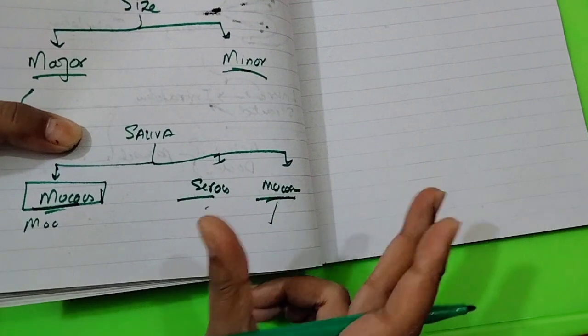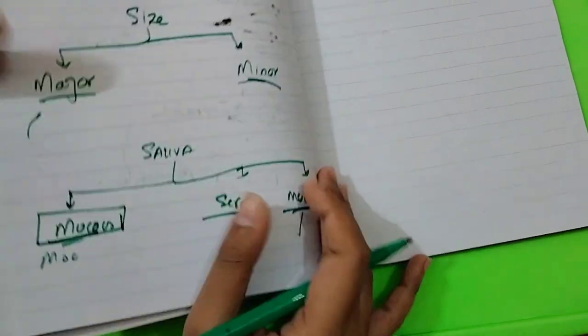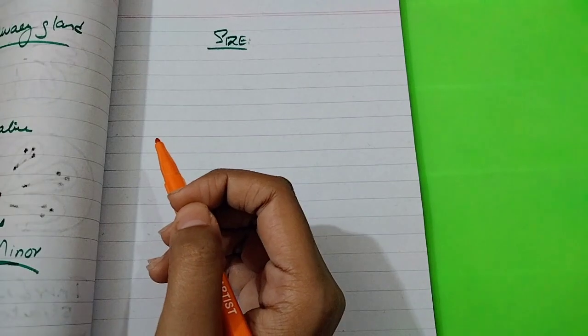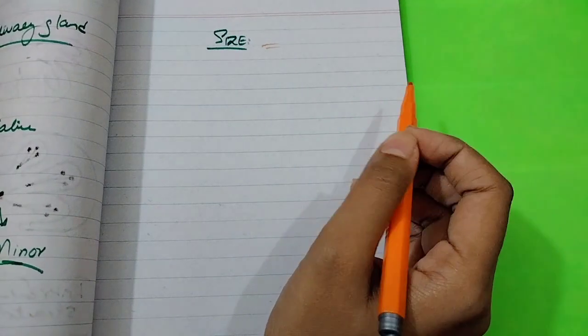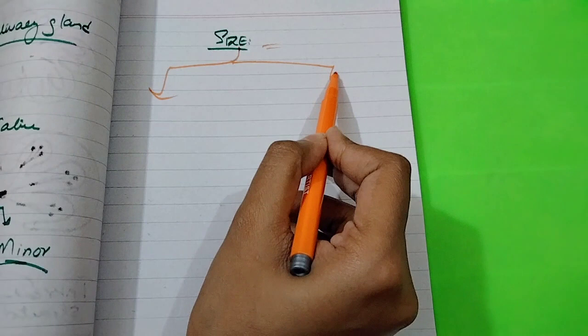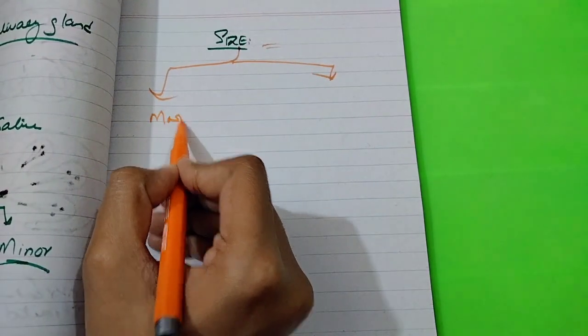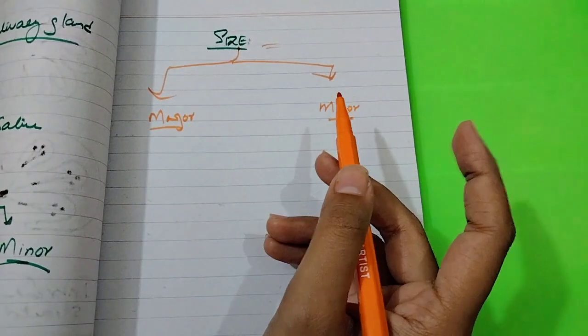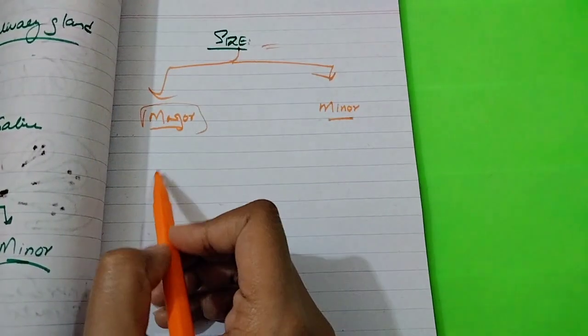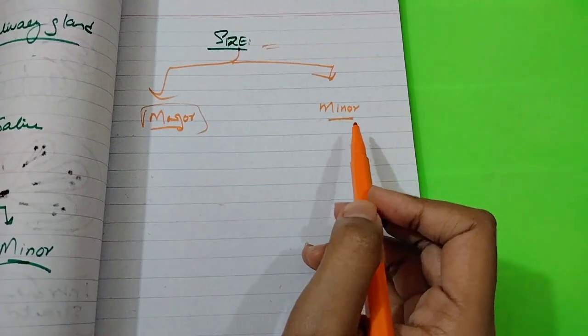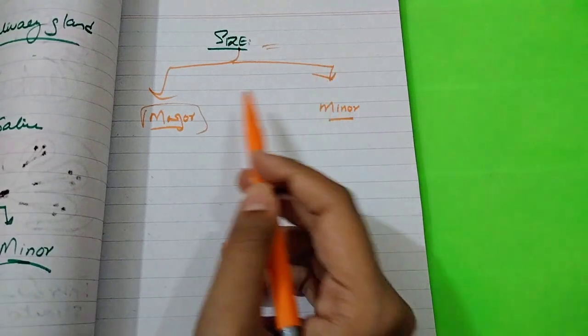So first, let's talk about size. How many types of salivary glands if we look at size? We have two types: one is major salivary gland and one is minor salivary gland.